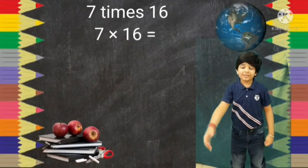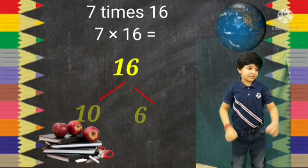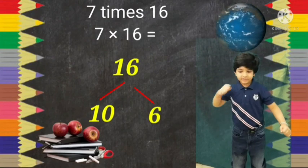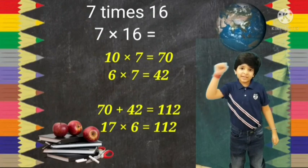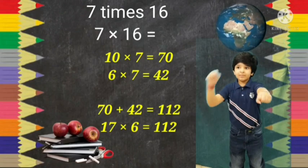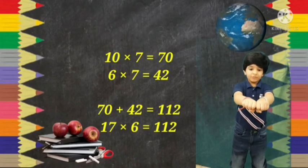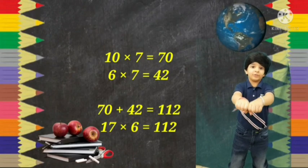7 times 16. Split 16 into 10 here and 6 here. 10 times 7 equals 70, and 6 times 7 equals 42. 70 plus 42 equals 112.